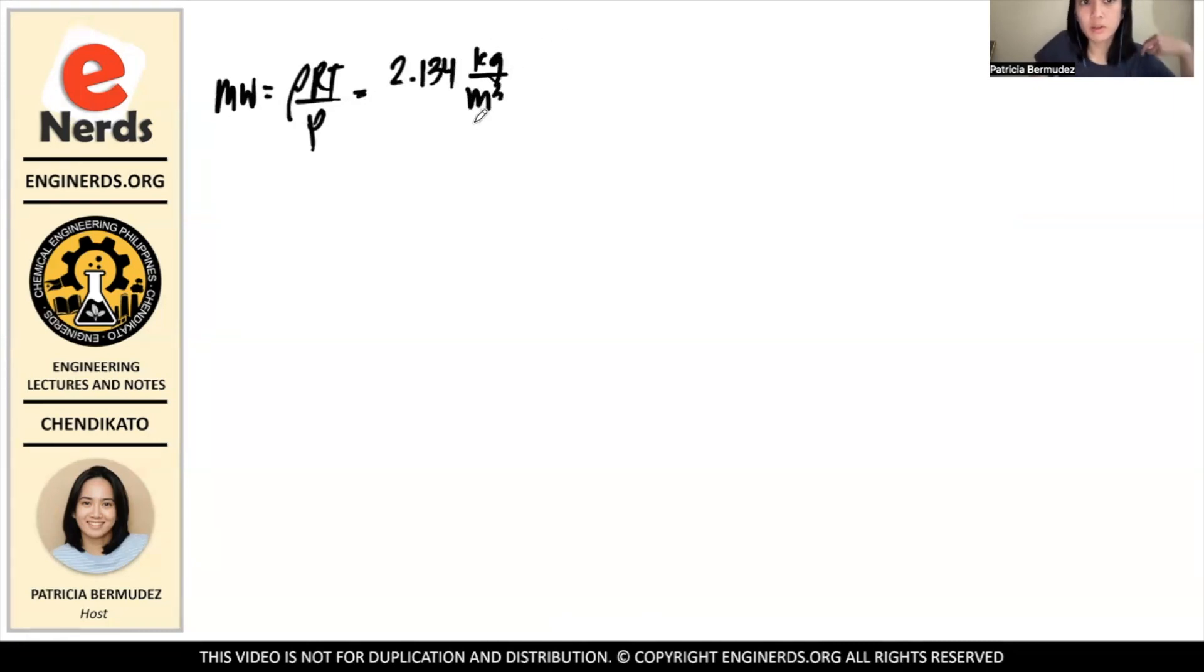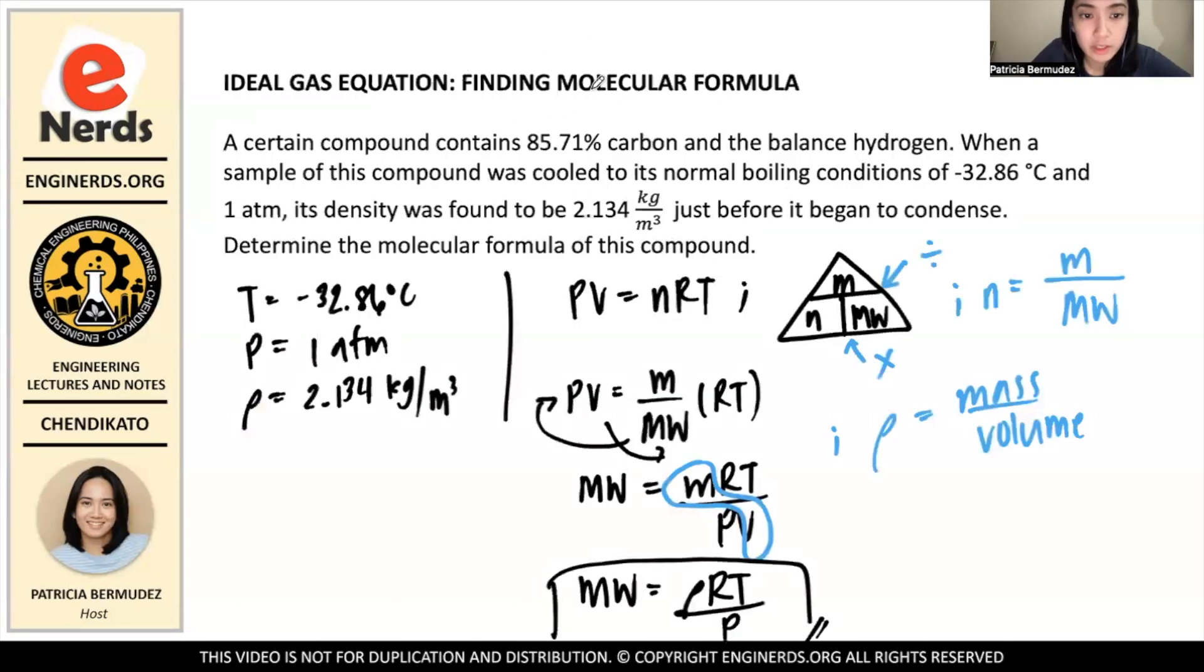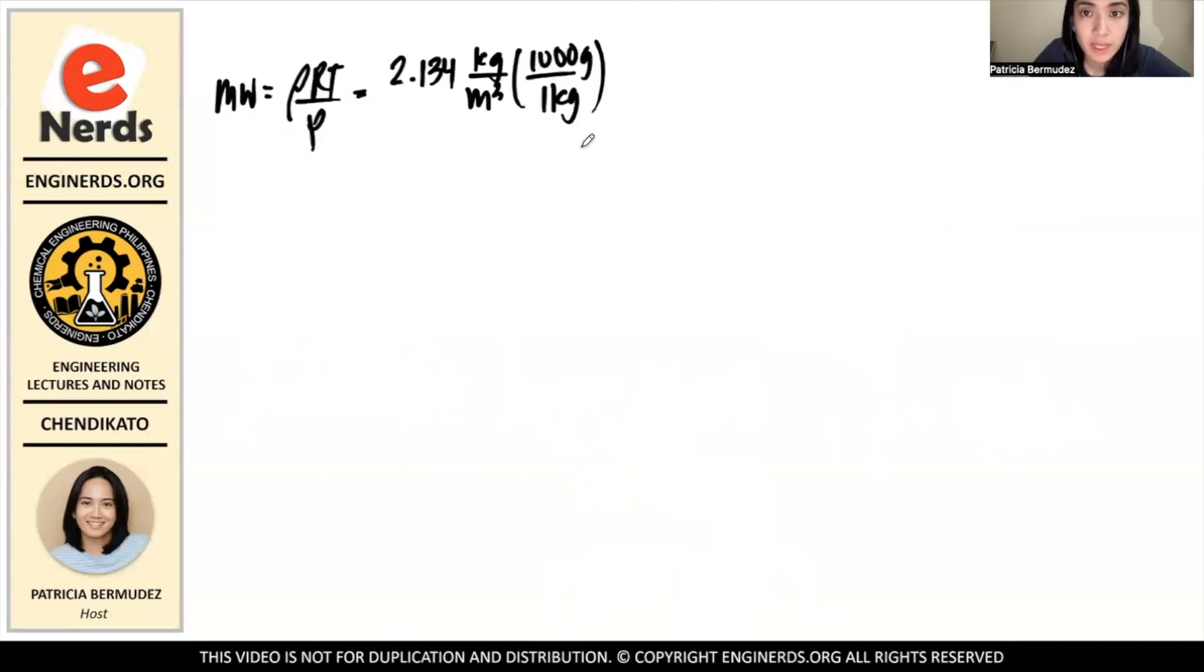So our density is 2.134 kg/m³. And since our goal is to find the molecular weight, which is in terms of grams per mole, we have to convert this kilograms to grams. So 1 kg = 1000 g. And for this one, the R that we're going to use is 0.08206 L·atm/(mol·K). Because our pressure is in atm, so it will be convenient for us.